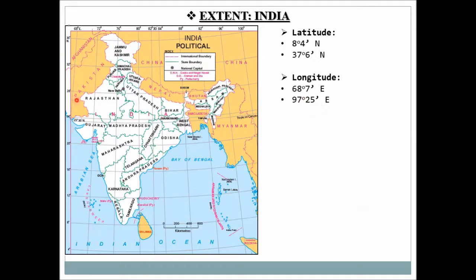The western part of India is at 68 degrees 7 minutes longitude, and the eastern part is at 97 degrees 25 minutes longitude. These longitudes are denoted by 'E' for East, because India lies entirely in the eastern hemisphere.